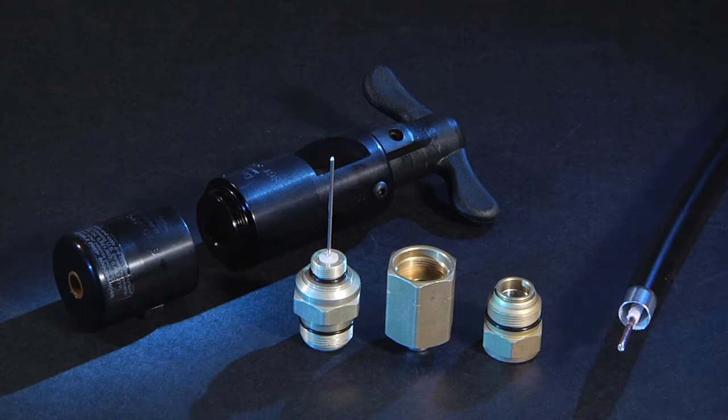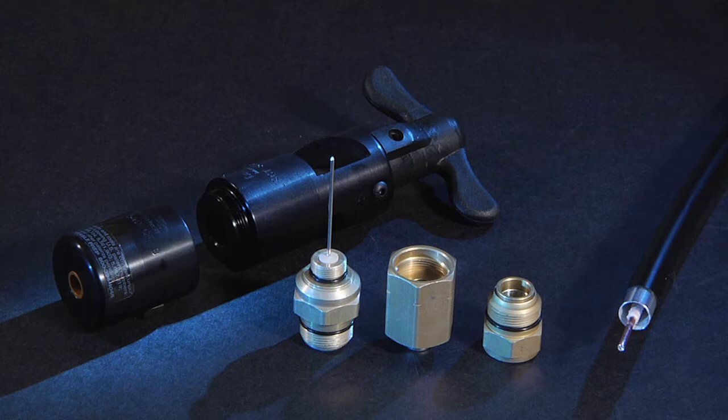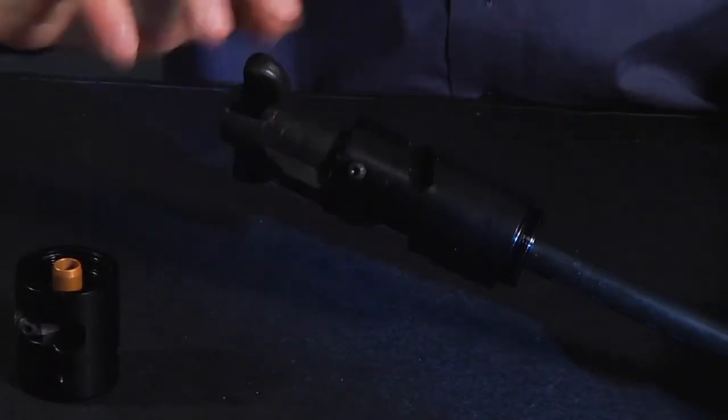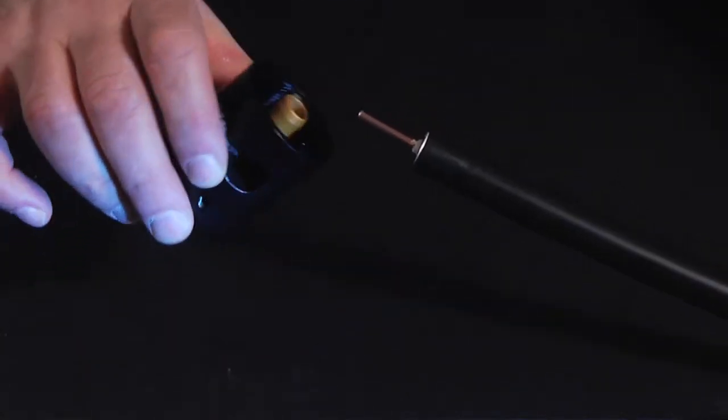This tool consists of two pieces. Part A cores the dielectric and strips the jacketed aluminum. Part B removes the outer jacket only.